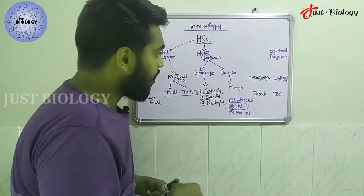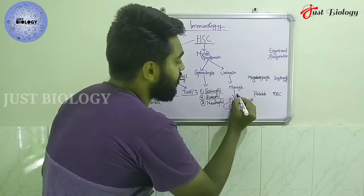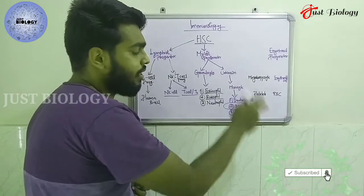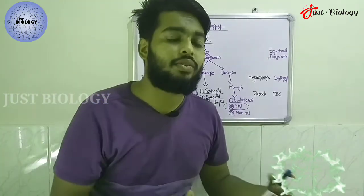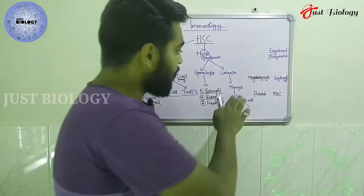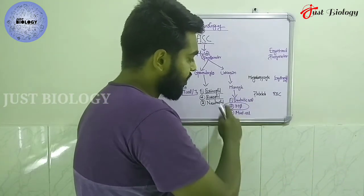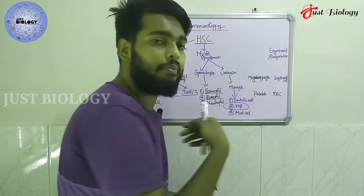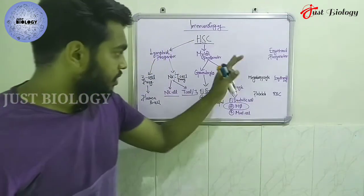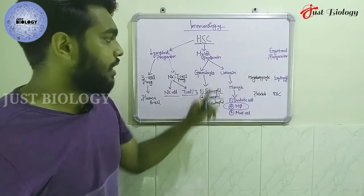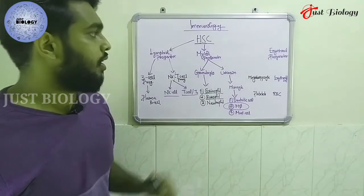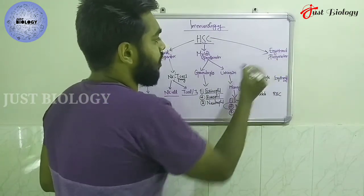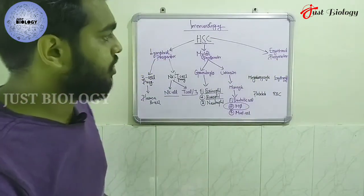The unknown progenitor will differentiate into three different types of cells including monocytes, and monocytes will further differentiate into three types of cells: dendritic cells, macrophages, and mast cells.